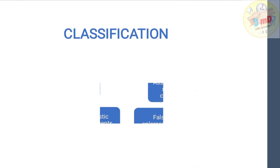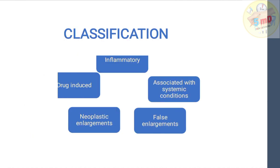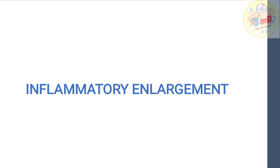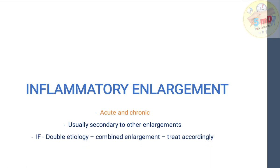The classification of gingival enlargement goes as follows: it could be due to inflammatory causes, drug-induced gingival enlargement, neoplastic enlargement, or false enlargement, and enlargements associated with systemic conditions. This classification is based on etiology. Inflammatory enlargement can be acute or chronic, and it is usually secondary to other systemic enlargements or conditioned enlargements.